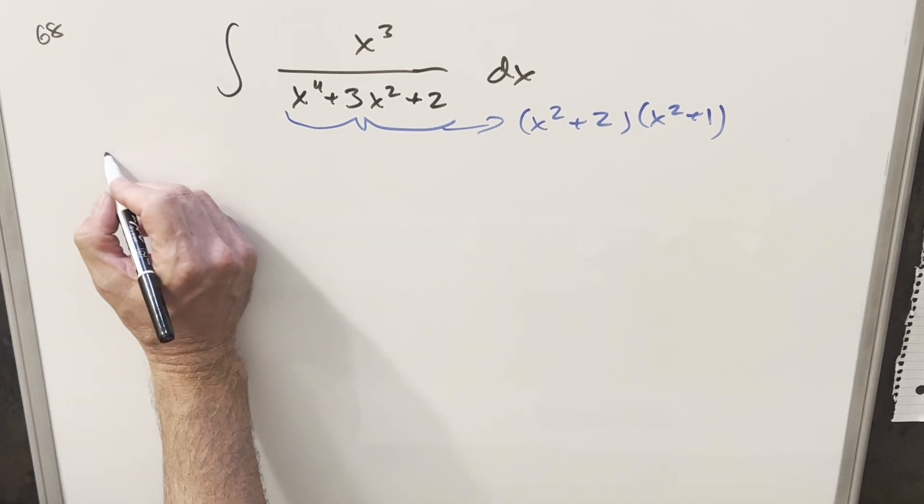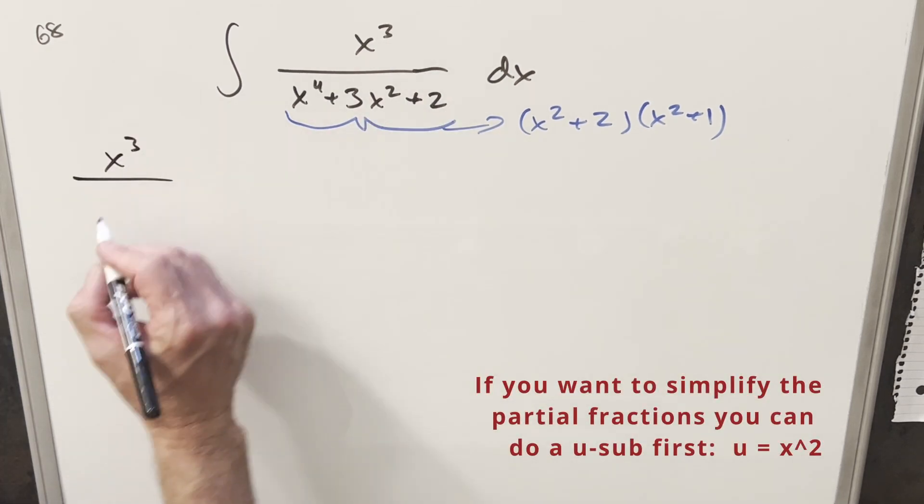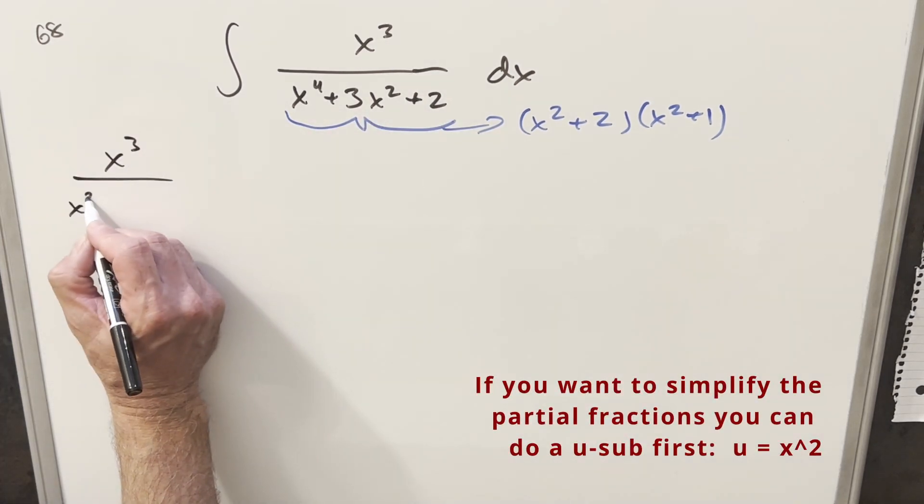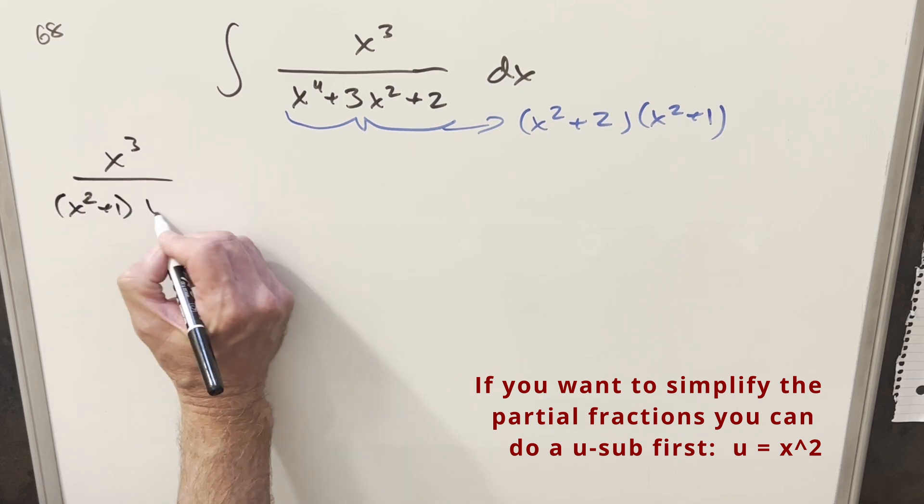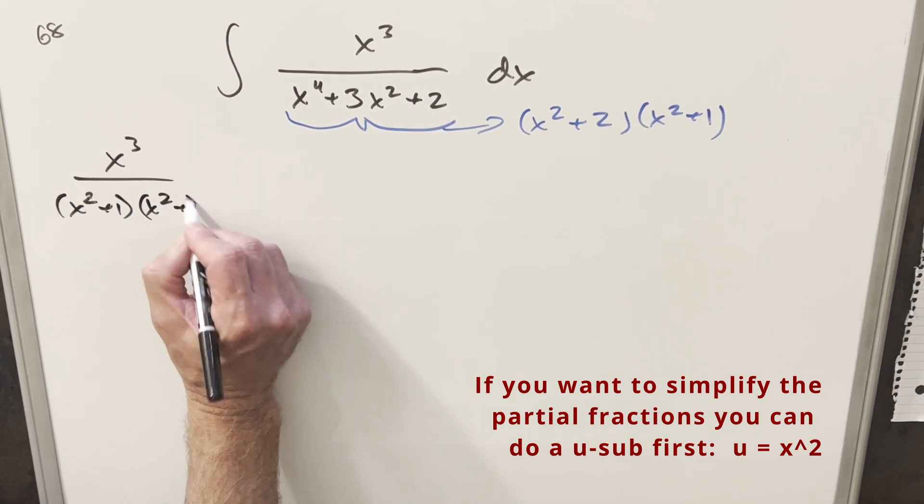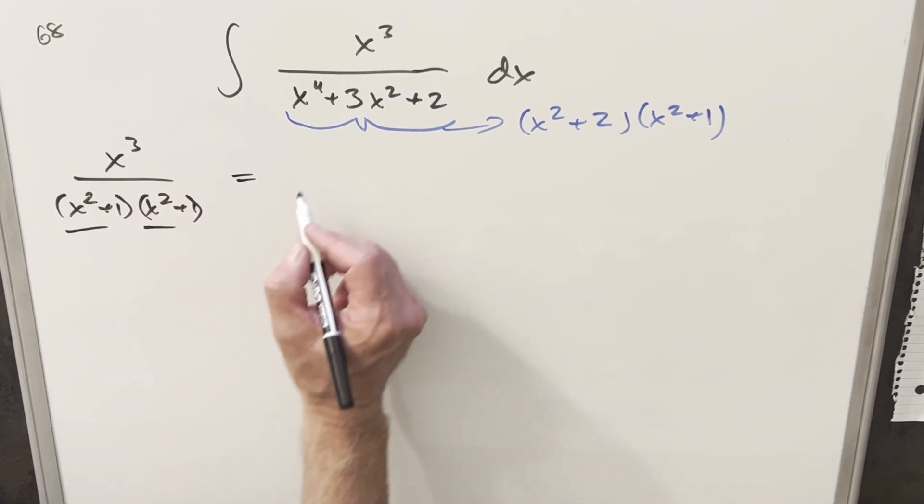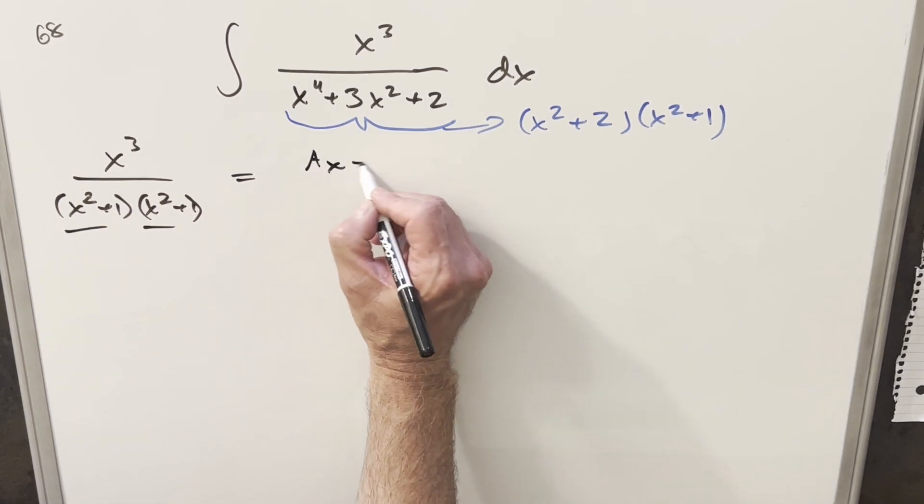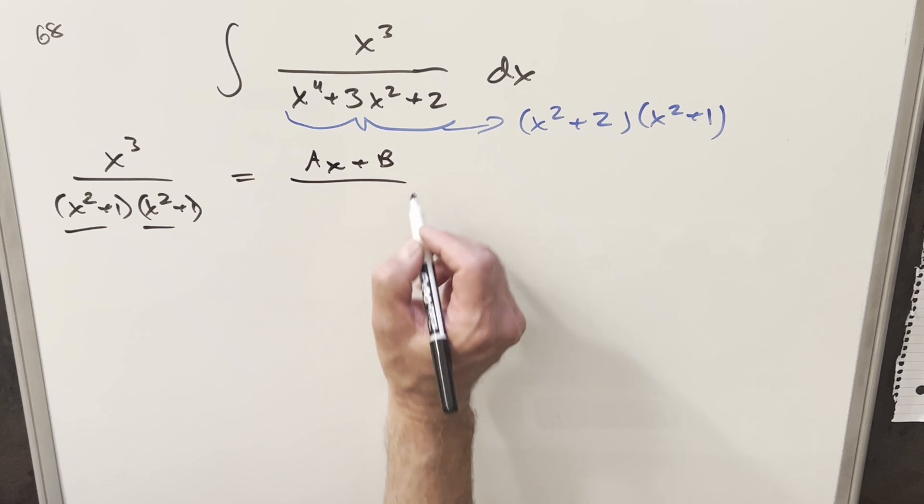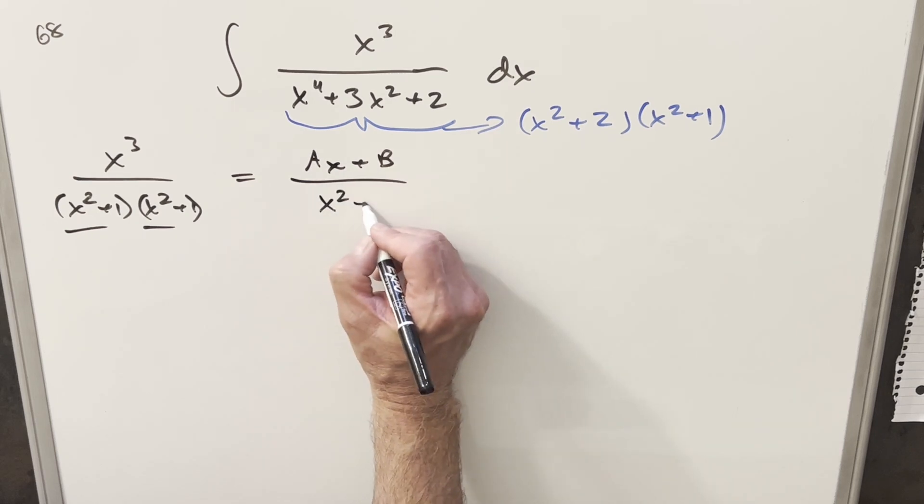And then for our partial fractions, let's just set this up. So we'll write this whole fraction as x cubed over x squared plus 1 times x squared plus 1. And then when we split this up, both of these are going to be quadratic, so we're going to need a first degree polynomial in the numerator. So we'll write this as ax plus b over x squared plus 1.